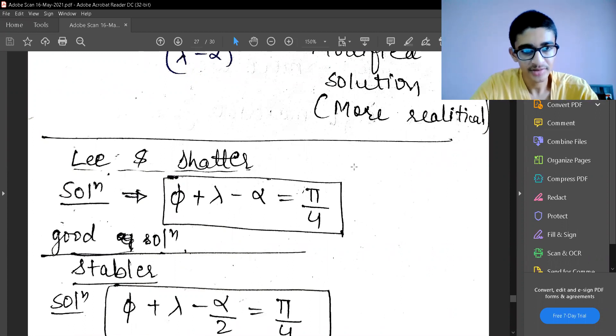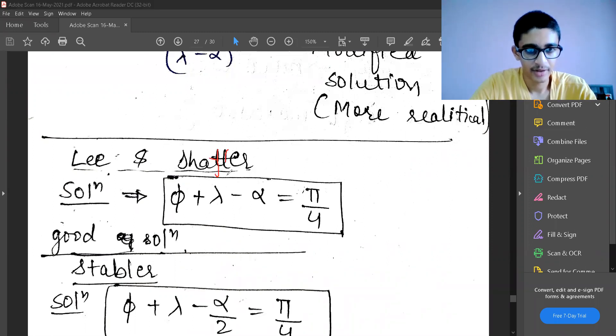Now, there are some more solutions by machining experts. One of them is Lee and Shaffer. This is S-H-A-F-F-E-R, not double T, double F here. The solution given by them is φ + λ - α = 45 degrees.